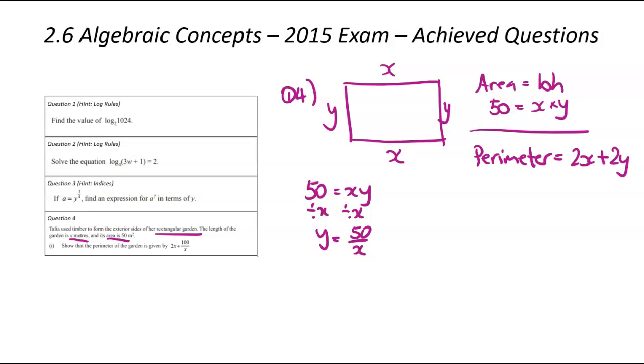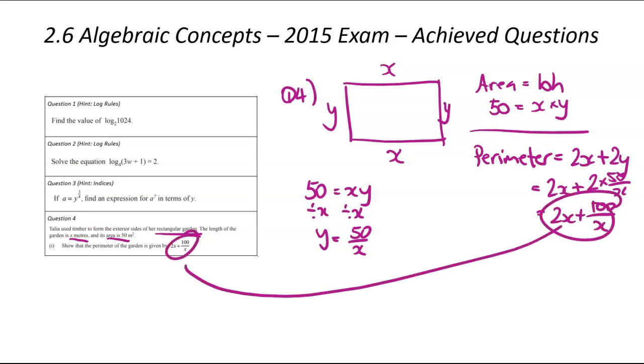If y is the subject, we can put it into the other equation, the perimeter equation, substitute, and that will only leave x. Let's do that here. So we've got 2x plus 2 times 50 divided by x. 2 times 50 is 100. So that's going to be 2x plus 100 divided by x. And that there matches the thing we were trying to achieve. And when the question says show, it means you're not calculating. It means you're trying to demonstrate that the answer you've been given is correct.